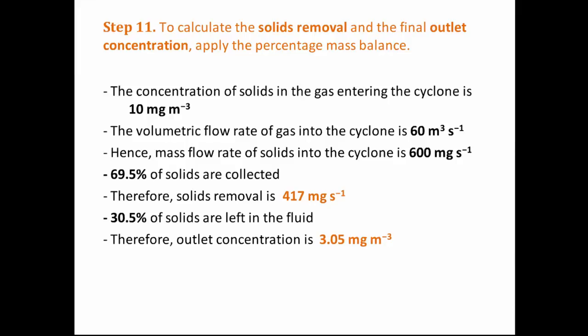To calculate the solids removal, we convert the concentration of solids entering the cyclone into a mass flow rate. We are given that the concentration is 10 mg per m³ of gas and the volumetric flow rate is 60 m³ per second, giving 600 mg per second of solids entering the cyclone. Since 69.5% are collected, 69.5% of 600 mg per second equals 417 mg per second — this is the solids removal. The outlet concentration is 30.5% of 10 mg per m³, which equals 3.05 mg per m³ of gas.